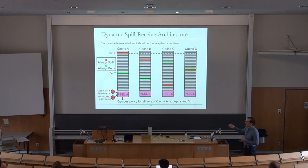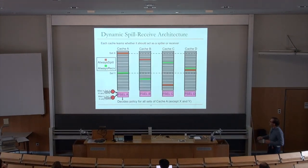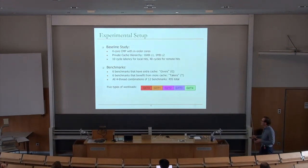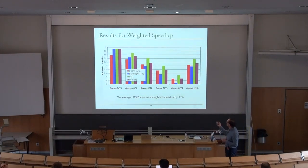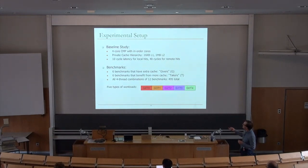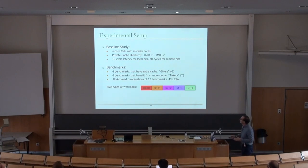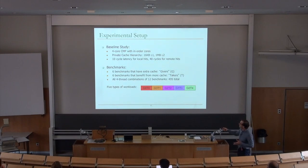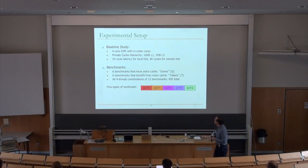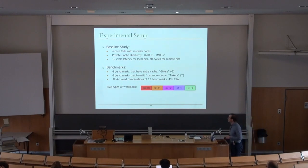The spiller lines spill to the receiver lines. This paper does performance evaluation — it simulates 10-cycle latency for local hits and 40-cycle latency for remote hits, so it doesn't consider finer-grained heterogeneity based on which specific cache you're spilling to or receiving from.